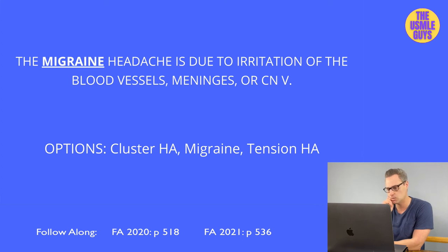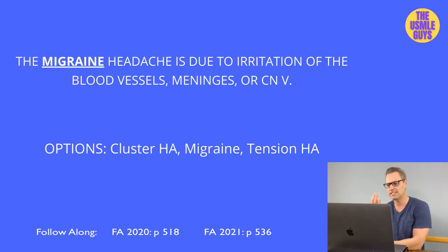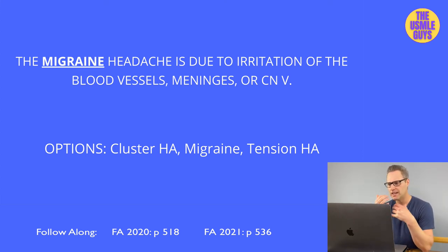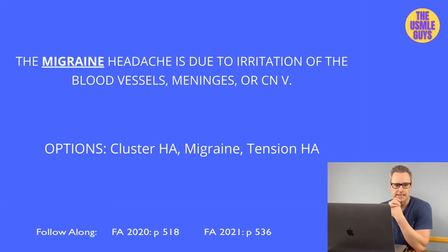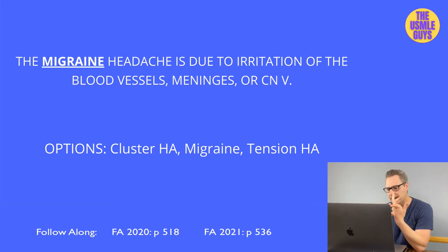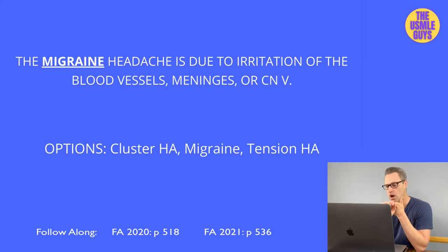Triptans can be used for both migraines and cluster headaches. For prophylaxis, first try lifestyle modifications — patients can keep a journal to identify migraine triggers and try to eliminate them. If that's insufficient, options include beta blockers, amitriptyline, topiramate, valproic acid, and even botox.